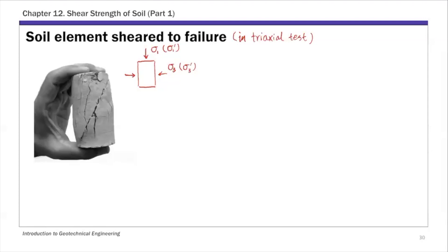On the right-hand side, this is a soil specimen sheared to failure during the triaxial test. There are different types of triaxial tests, which we'll discuss more in part three of this chapter. Given sigma one prime and sigma three prime — the major and minor principal stresses at failure — we can plot Mohr's circle in normal stress versus shear stress space.